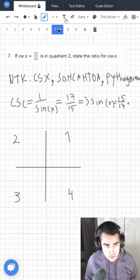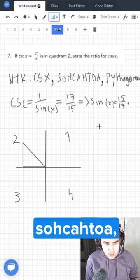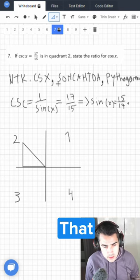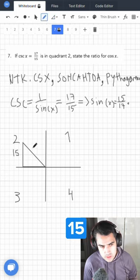Now trig function is like a right angled triangle, just like this. And because of SOHCAHTOA, we know that sine is opposite over hypotenuse. Opposite is 15, and hypotenuse is 17.